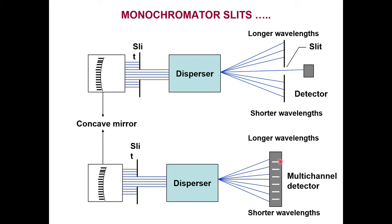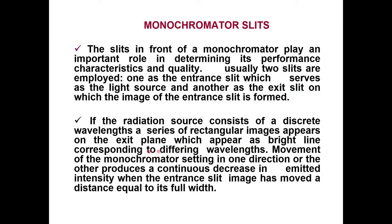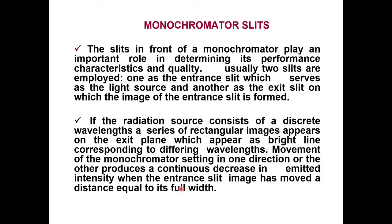A multi-channel detector allows picking up as many wavelengths simultaneously as needed. This is a typical arrangement in almost all spectrophotometers including atomic absorption. The slit in front of a monochromator plays a very important role in determining its performance characteristics and quality. Usually two slits are employed: an entrance slit and an exit slit. The entrance slit serves as the light source, and the exit slit shows the image of the entrance slit. Moving the monochromator setting produces a continuous increase or decrease of the wavelength.